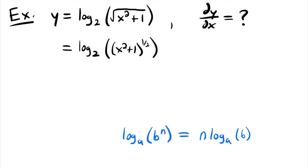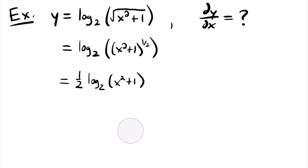We can take that one-half power from inside the log function and bring it to the outside, so y is equal to one-half times log base 2 of x squared plus 1. This makes it much easier to take the derivative. Before, the inside function would have required using the chain rule again because of the square root, which would have been messier and more complicated. Now it's going to be a lot simpler. So y prime is equal to one-half times the derivative of log base 2 of x squared plus 1.